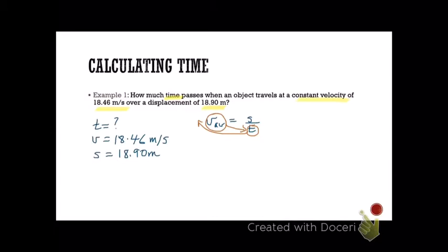Effectively, what you're doing in formulae of this kind is switching the Vav and the T around. So you end up with T equals S over Vav. Substitute the values, calculate it, and the answer is 1.02 seconds, and we just need to highlight that for clarity.